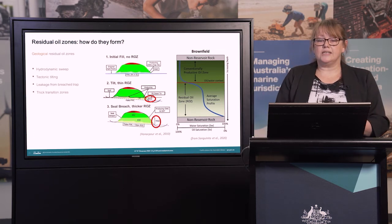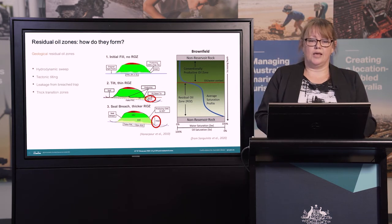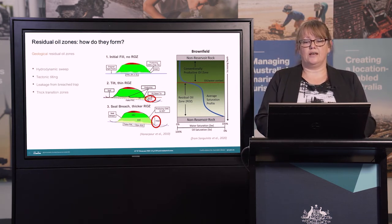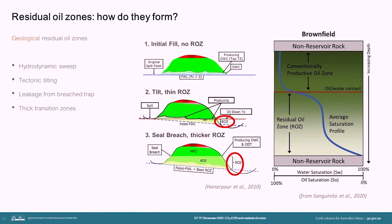There are a few different ways that these geological residual oil zones can form. By understanding how ROZs might form in a particular region, that helps us target where we might find them and where we should look. For example, the hydrodynamic drive method, where flow of water actually flushes through and displaces oil in a trap, is a common mechanism for the formation of major North American residual oil zones, but hasn't really been documented in Australia. We tend to see residual oil zones formed through tectonic tilting, leakage from a breached trap, and also thick transition zone types of occurrences.